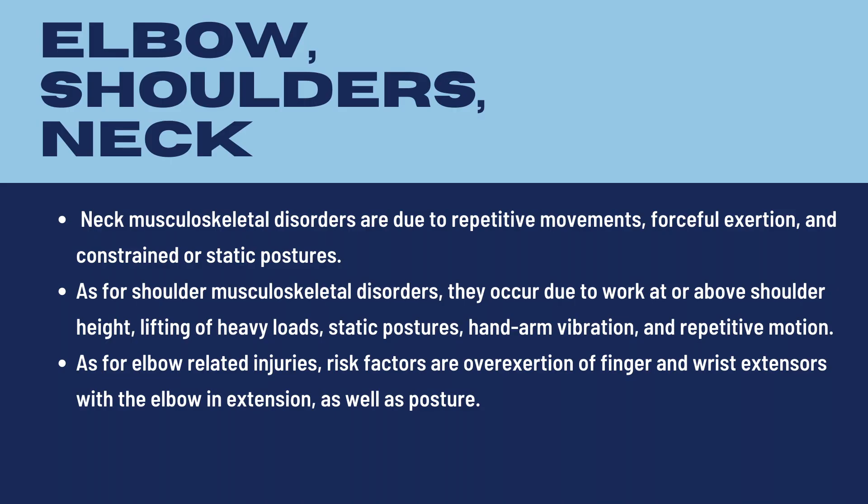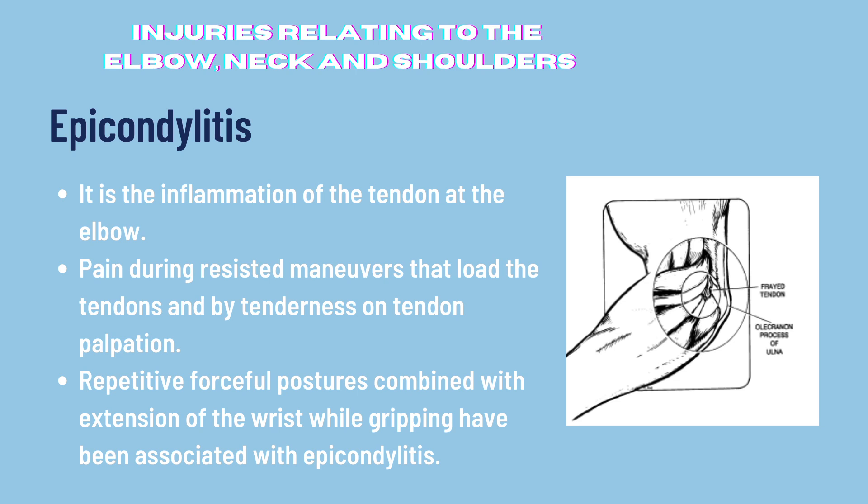For the next portion of our discussion, we will be discussing elbow, shoulder, and neck-related injuries. Neck musculoskeletal disorders are associated with repetition, forceful exertion, and constrained or static postures. Shoulder musculoskeletal disorders occur with work at or above shoulder height, lifting of heavy loads, static postures, hand-arm vibration, and repetitive motion. For elbow epicondylitis, risk factors are due to overexertion of fingers and wrist extensors with the elbow in extension, as well as posture. Similar to tendonitis, epicondylitis is the inflammation of the tendon at the elbow, also known as lateral epicondylitis or tennis elbow. It is characterized by pain during resisted maneuvers that load the tendons and by tenderness on tendon palpation. Repetitive forceful postures such as twisting or pronation of the forearm combined with wrist extension while gripping have been associated with epicondylitis.